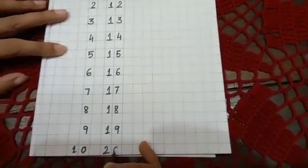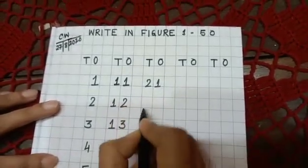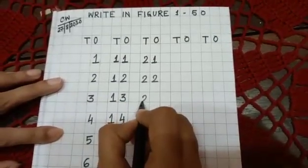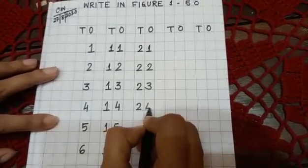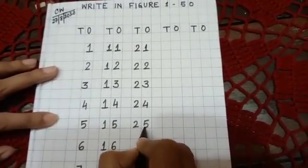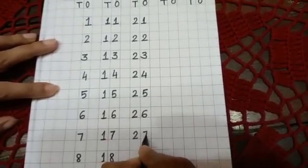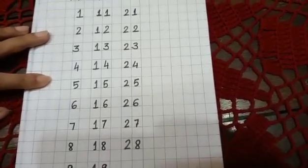2-9, twenty-nine, 3-0, thirty. 3-1, thirty-one, 3-2, thirty-two, 3-3, thirty-three, 3-4, thirty-four, 3-5, thirty-five.